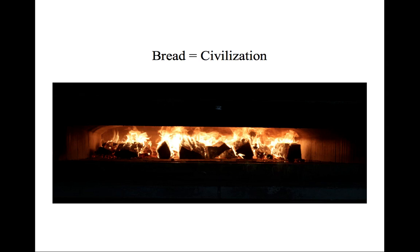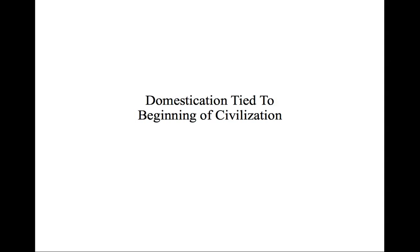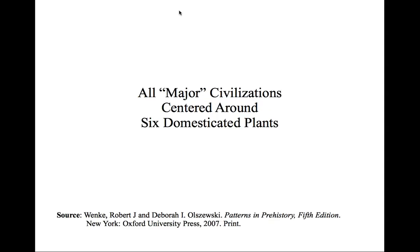So bread is one of the initial things that's kind of tied into the beginnings of civilization. Because the widespread use of grains is connected with early domestication. When we see farming starting throughout the world in any early civilization, the use of grains is connected with that, and domestication is tied to the beginning of civilization. If you look at the anthropological record, all of what are considered the major civilizations are centered around six domesticated plants: wheat, barley, millet, rice, maize, and potatoes.